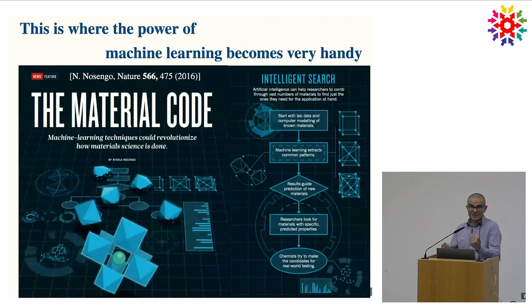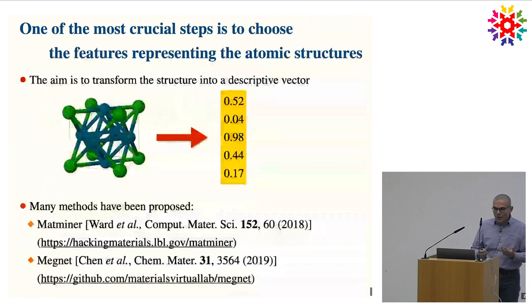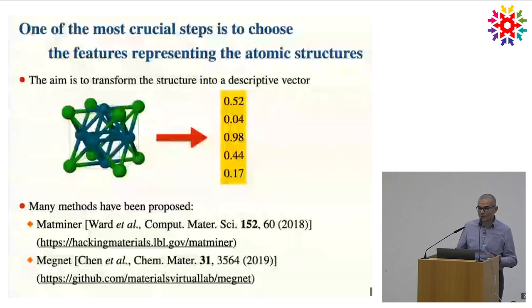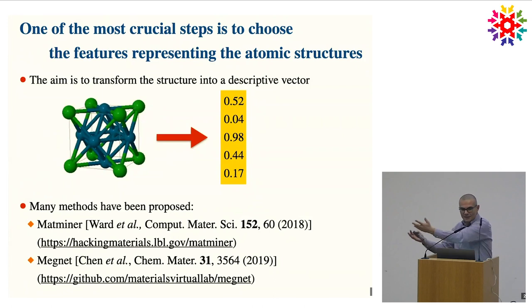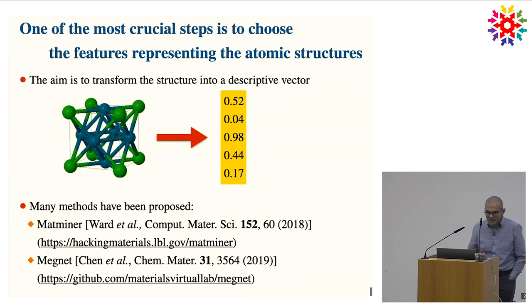This is where machine learning might become handy, because we want to be able to do these calculations faster and look at stability as a function of temperature. One of the most crucial steps for using machine learning is to represent the structure with numbers — features that describe the structures. We usually use two methods: one is MatMiner, and the other is MAGNET, which is a convolutional graph network, but at the end of the process you also get a vector of numbers as a description of your structure.